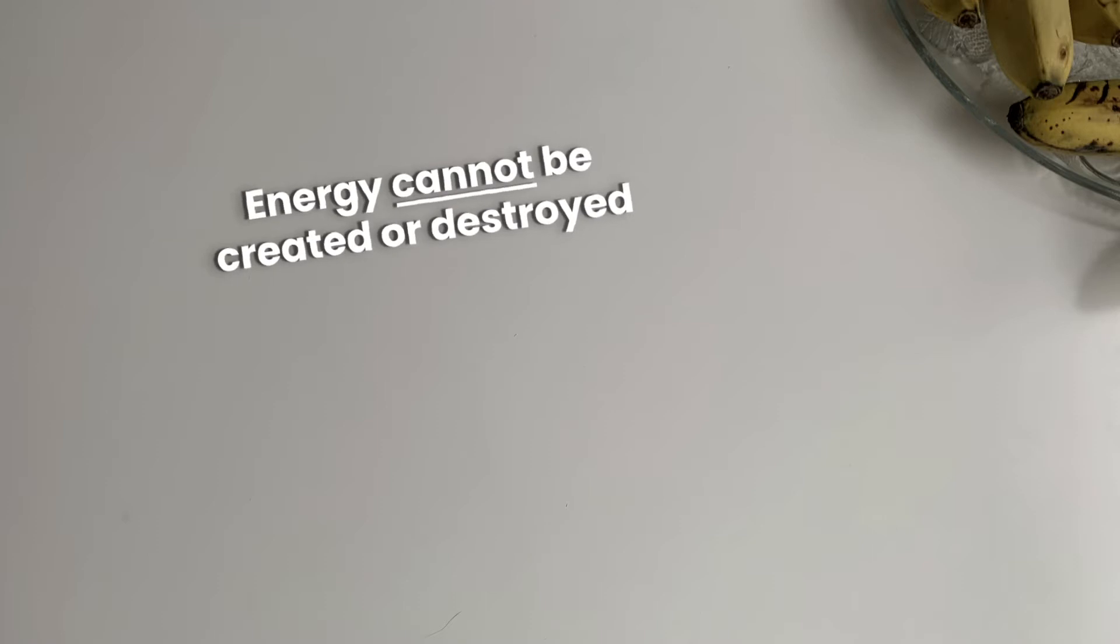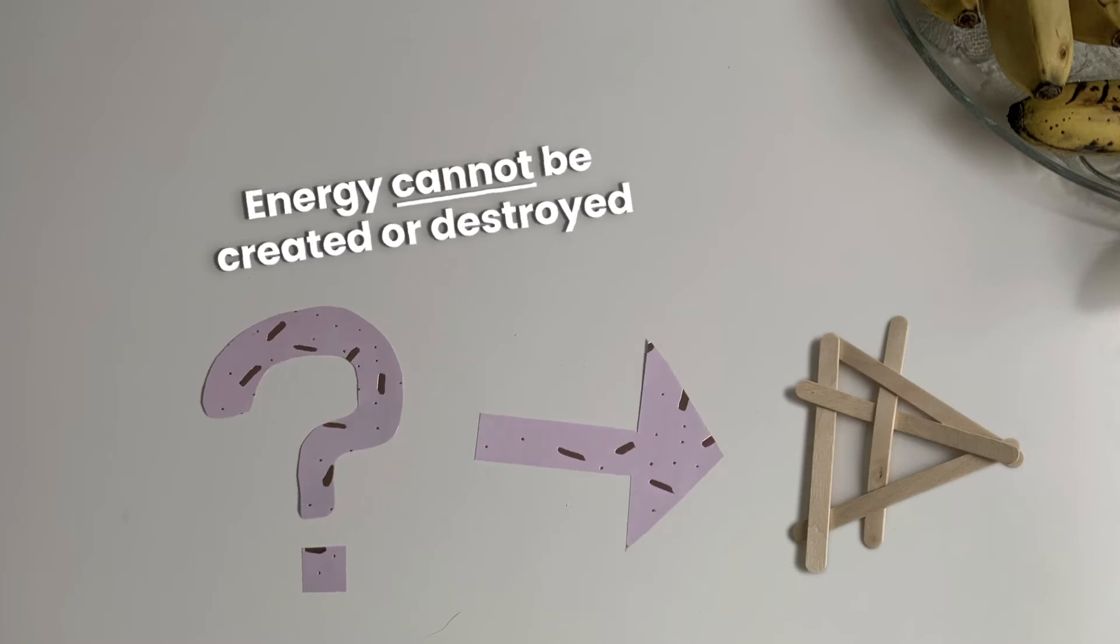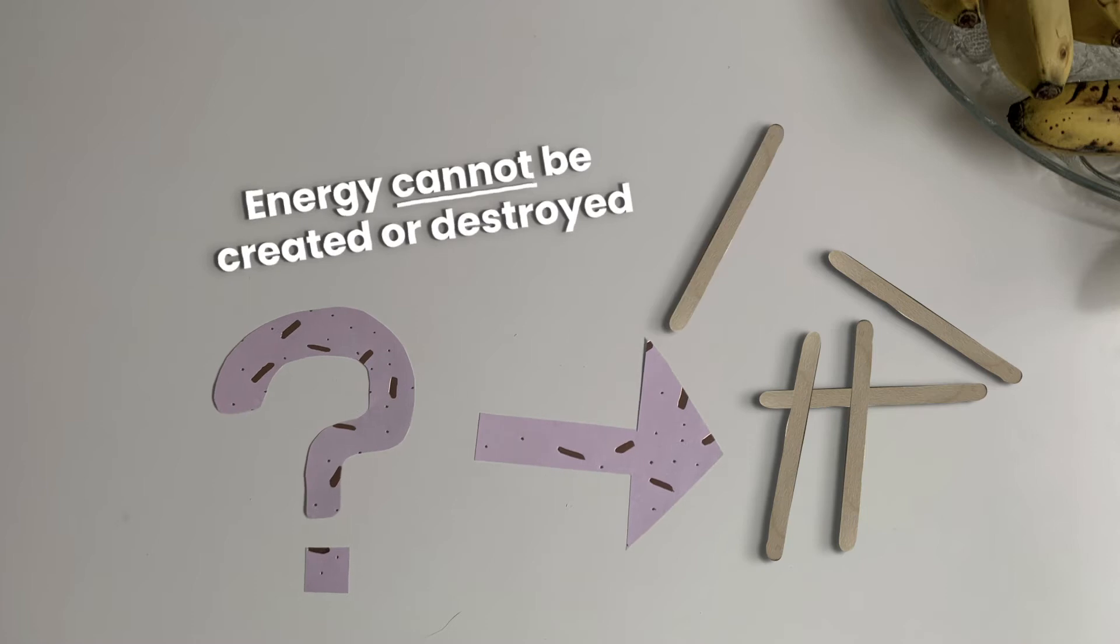Energy cannot be created or destroyed. That's the first law of thermodynamics. It can only be converted between different forms. We can see one form of energy in this equation, the movement of the popsicle sticks. That's a form of kinetic energy.